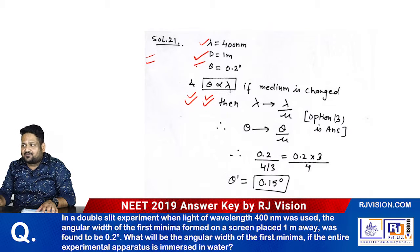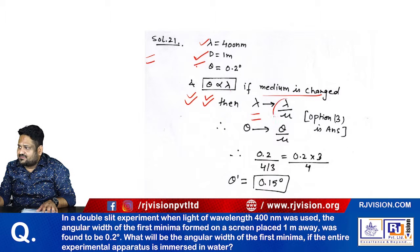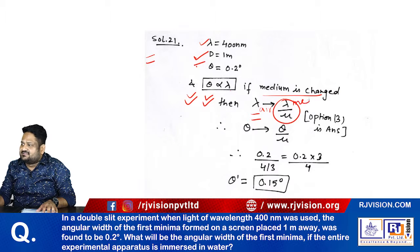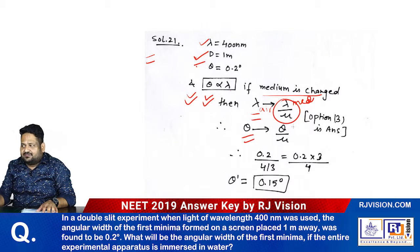You can see that theta is proportional to lambda. If the medium is changed, then lambda is replaced with lambda by μ. This is in air, this is in some medium. Then theta is also replaced with theta by μ.